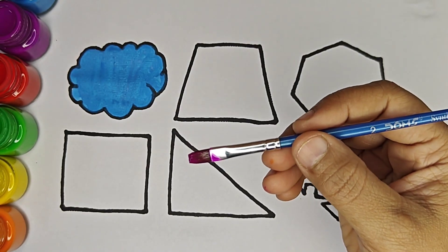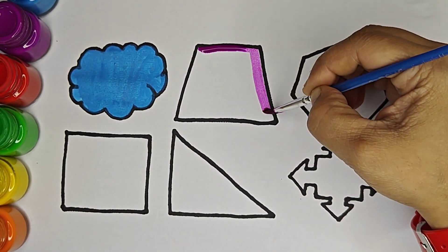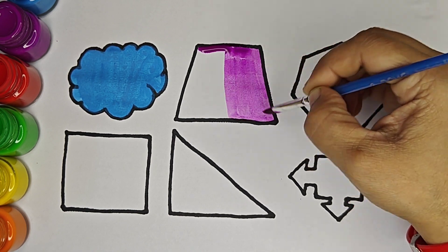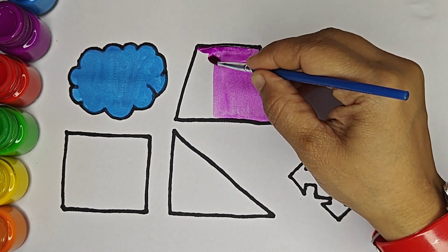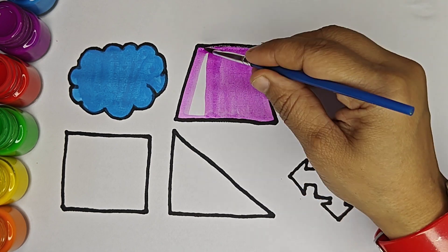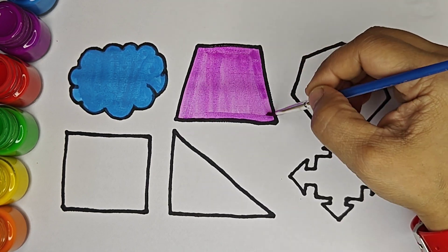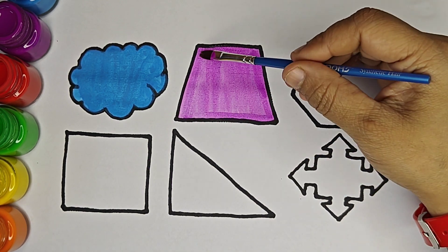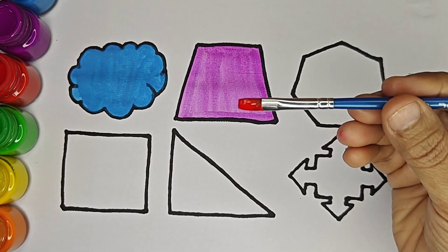This is purple color. This shape is trapezoid. It has four sides: one, two, three, four. This is red color.